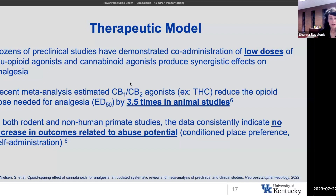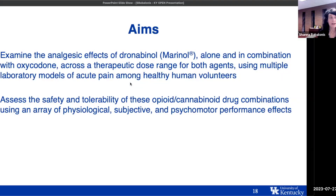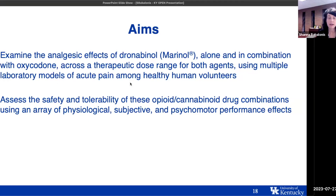The animal data suggests you can reduce the opioid dose needed for analgesia by three and a half times if you have a cannabinoid agonist on board. And in these animal studies, there are no increases in outcomes related to abuse potential. The aims of this study in humans were to examine the analgesic effects of dronabinol (or Marinol), a synthetic THC product that is FDA approved, alone and in combination with oxycodone across a therapeutic dose range for both agents. We used several laboratory models of acute pain among healthy participants, and we were really looking at the safety and tolerability of opioid and cannabinoid combinations, as well as physiological, subjective, and psychomotor effects.